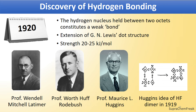In 1919, the discovery of hydrogen bonding — one of the most significant in supramolecular chemistry — was initiated when Huggins, in his master's thesis, reported an idea of a hydrogen fluoride dimer. This was an extension of Lewis dot structure, which inspired Professor Wendell Mitchell Latimer and Professor Worth Huff Rodebush to define a new bond. In their 1920 paper, they referred to the hydrogen nucleus held between two octets as constituting a weak bond. Later, in 1929, Pauling termed this the hydrogen bond in a letter to William Bragg. This is a strong non-covalent interaction with a strength of 20 to 25 kJ per mole.